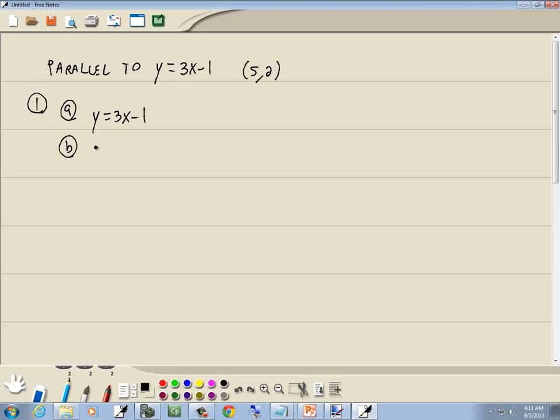Our next sub-step says to identify our slope. Our slope, if it's in slope-intercept form, is whatever number is before x, which is 3. Now our third sub-step: parallel lines have the same slope. So if it's parallel to this, we said its slope was 3, so the m we're trying to find is going to be 3.